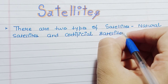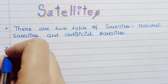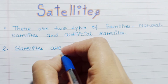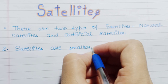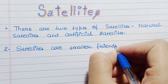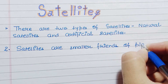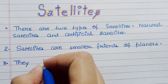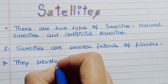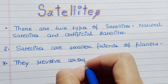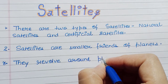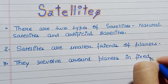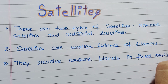There are two types of satellites: natural satellites and artificial satellites. Satellites are smaller friends of planets. They revolve around the planets in a fixed orbit.